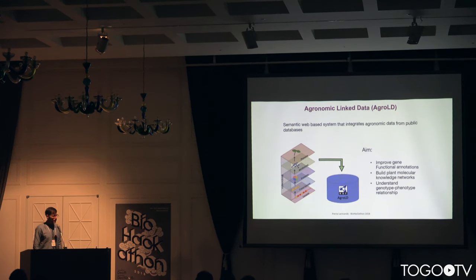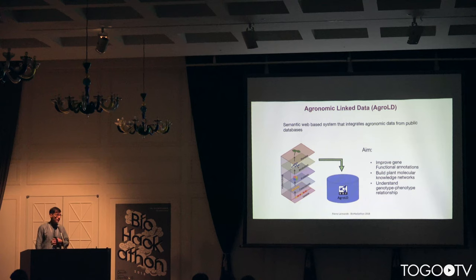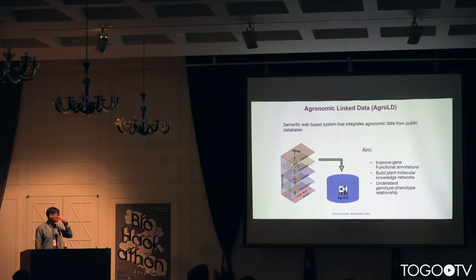We started a project of a semantic web-based system that integrates agronomy data from public databases and also from resources that we produce at the platform. It's called AgroLD, available at AgroLD.org. The aim is to improve gene functional annotations, build up a plant molecular knowledge network, and to understand the phenotype-genotype relationship.